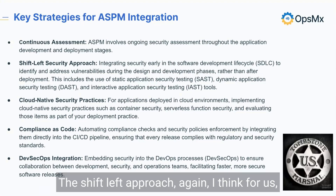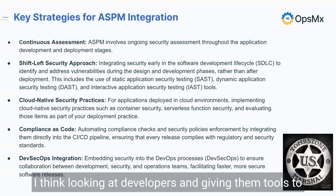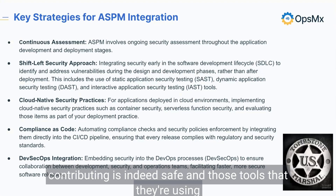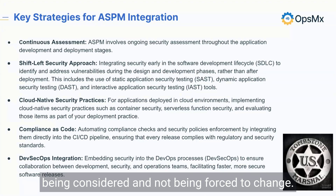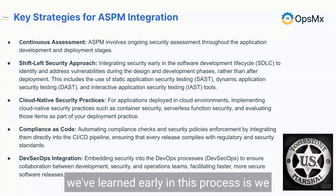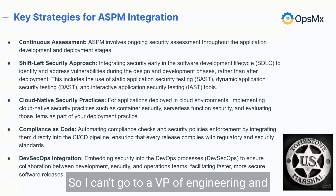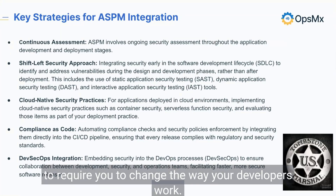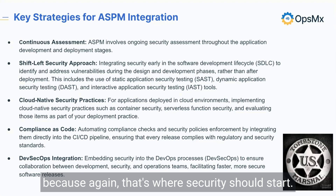The shift left approach — we continue to embrace security at the source. Giving developers tools to make sure that the code they're contributing is safe, and not forcing them to change the tools they've chosen. One of the biggest things we've learned is we want to come to where our customers are; we don't expect them to come to us. I can't go to a VP of Engineering and say I've got great stuff but it's going to require you to change how your developers work. So we continue to embrace that shift left approach, because that's where security should start.